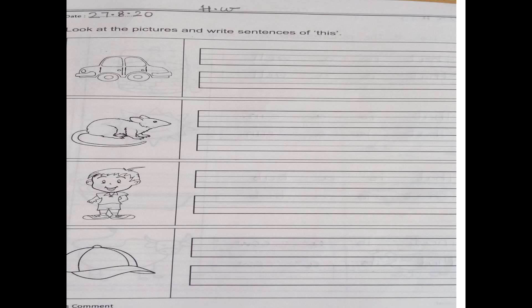So there is a little homework for you. Look at the pictures and write the sentences of 'this'. Aapko 'this' ke sentences banane hai. So first picture kiski hai? Car ki. Car ka spelling kya hota hai? C-A-R car. Next picture kya hai? Rat, R-A-T rat. Then boy, B-O-Y boy. And then is cap, C-A-P cap.